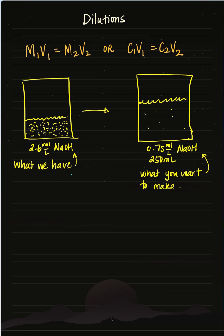Let's learn how to do a dilution. So let's pretend I have a 2.6 mole per liter solution of NaOH. This is my stock solution and it's more concentrated.